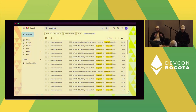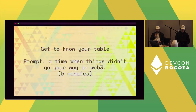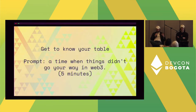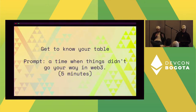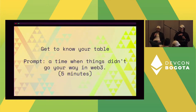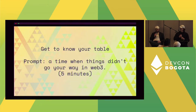We want to start with everyone just talking to each other at their tables — get to know each other, maybe introduce yourselves. Here's a prompt based on what I just showed: a time when things didn't really go your way in web3. That could be losing money trading derivatives, suffering a lot of impermanent loss, or a time when you should have sold the NFT at the top. Take five minutes and chat with the folks around you.